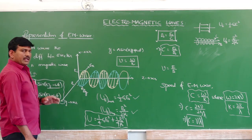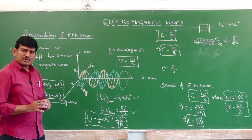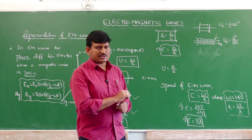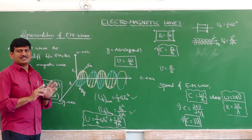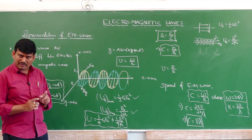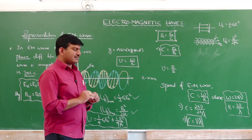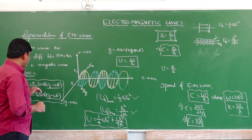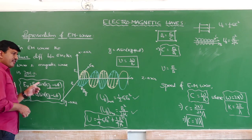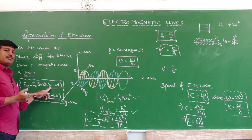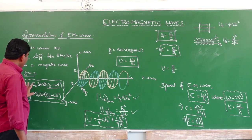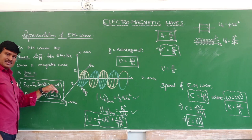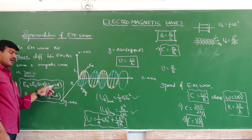In an electromagnetic wave, the electrical wave and magnetic wave are mutually perpendicular to each other and also perpendicular to the direction of propagation. They are always in phase. If the wave propagates along the z-axis, the electric field will be along x or y, and the magnetic field along the other. If the wave propagates along the positive direction, take a minus sign in the equation; for negative direction, take a plus sign.